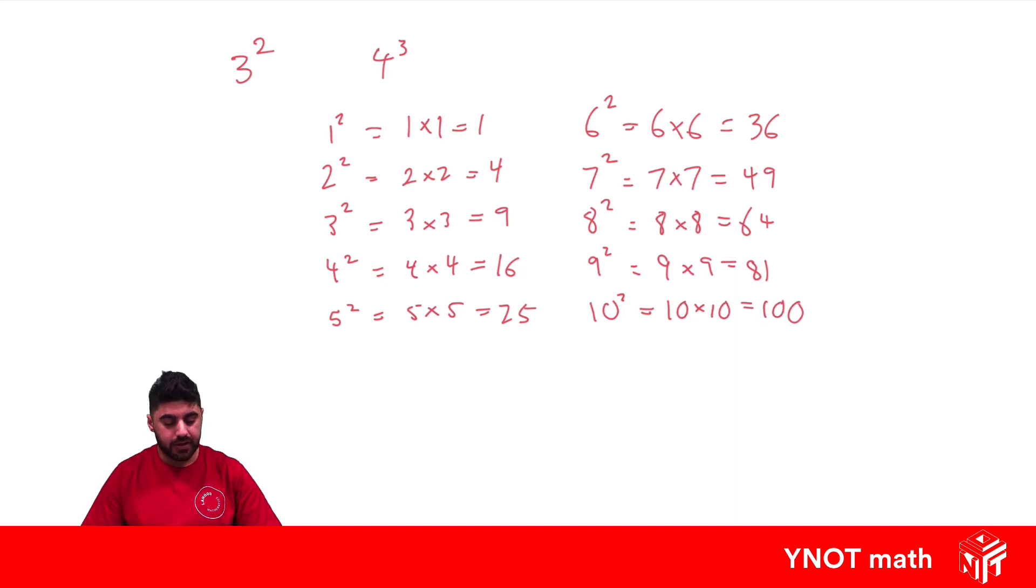And yeah, you should really get to know some of these off by heart. But if you don't, it's just times tables, so you should be able to work it out on the spot. And all these numbers 1, 4, 9, 16, 25, 36, 49, 64, 81, and 100, there's obviously an infinite amount of them. We call these our perfect square numbers, because there is a number squared that equals those numbers.